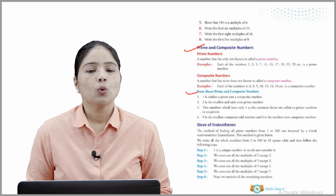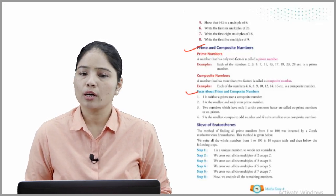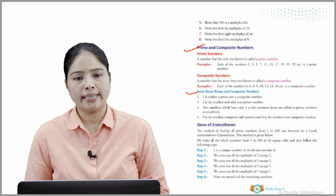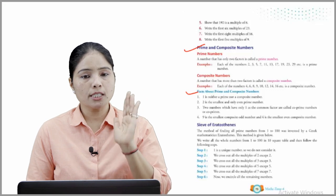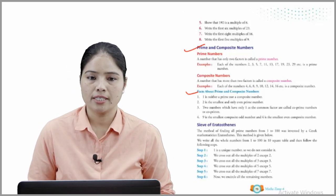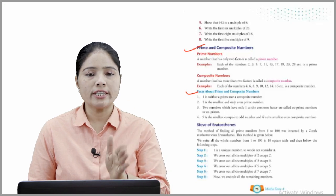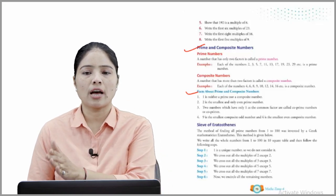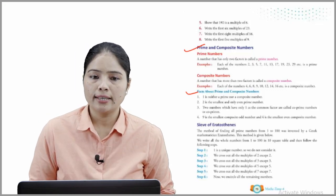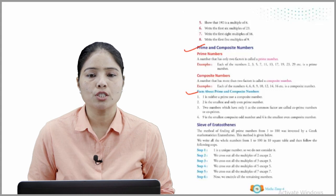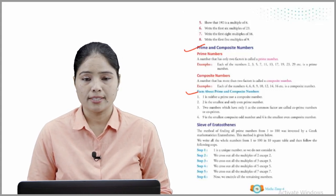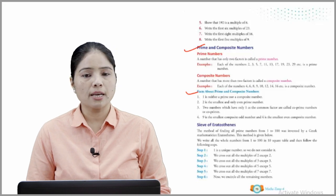Facts about prime and composite numbers. Fact 1: 1 is neither a prime nor a composite number. Fact 2: 2 is the smallest and only even prime number. Fact 3: Two numbers which have only 1 as the common factor are called co-prime numbers. Fact 4: 9 is the smallest composite odd number, and 4 is the smallest even composite number.